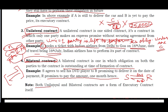Both unilateral and bilateral contracts are a form of executory contract itself, where parties have something remaining to do - whether one party or both parties. This last categorization is very easy and you should have understood it easily.